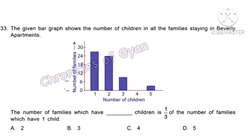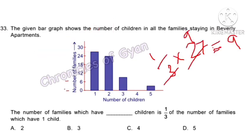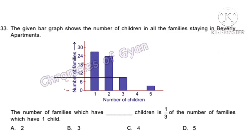Question 33 (Achiever). The bar graph shows the number of children in families in Beverly apartments. The number of families with a certain number of children is one third of families with one child. From the graph, families with one child is 27. The number of families with 3 children satisfies this condition — one third of 27 equals 9. Hence option B is the answer.